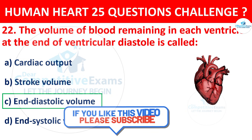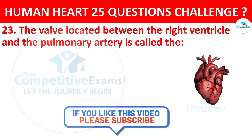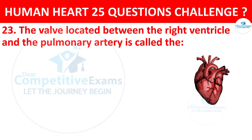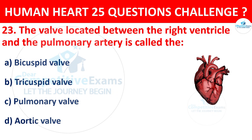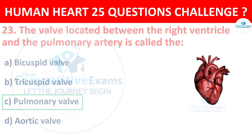Question number 23. The valve located between the right ventricle and the pulmonary artery is called? Options: Bicuspid valve, Tricuspid valve, Pulmonary valve, or Aortic valve. The correct answer is C, that is Pulmonary valve.